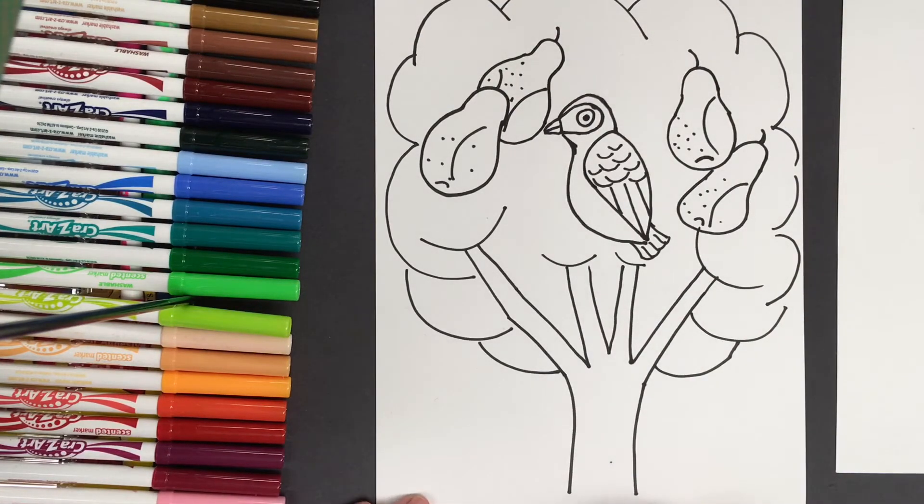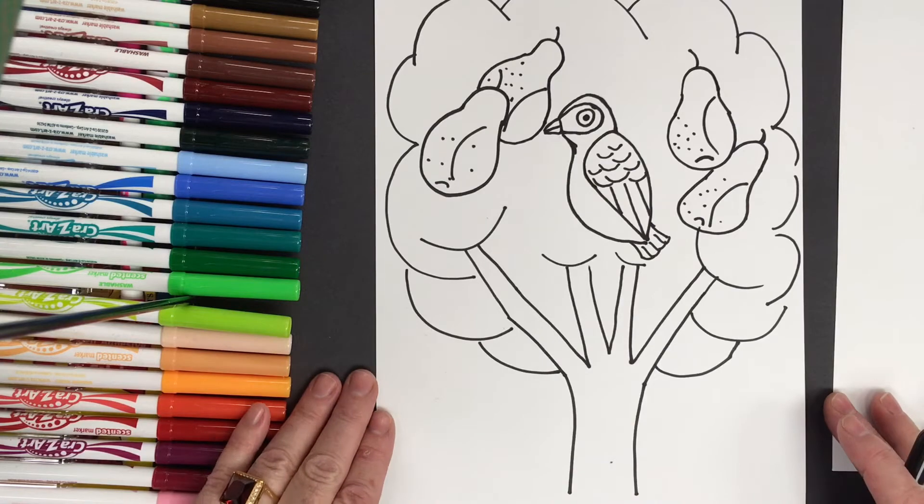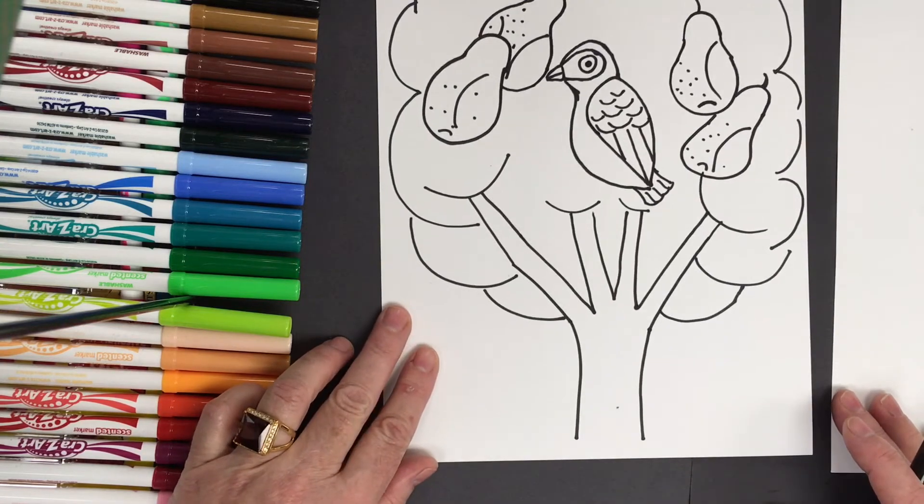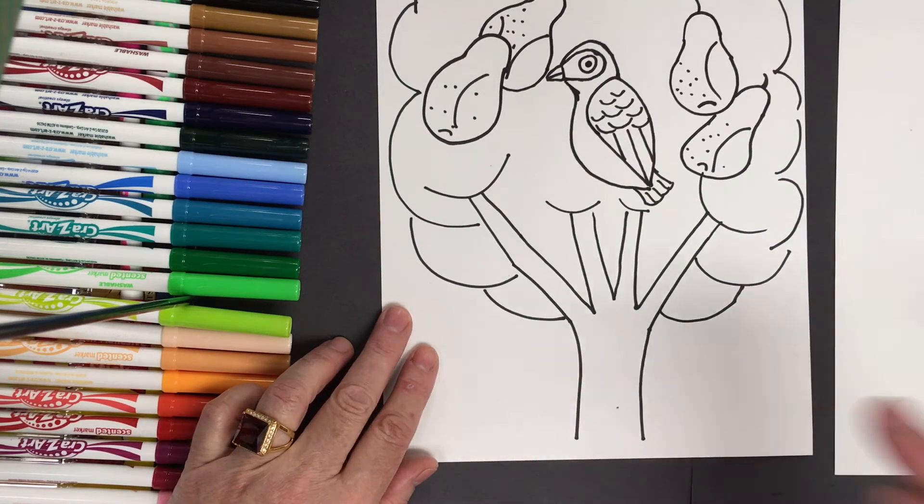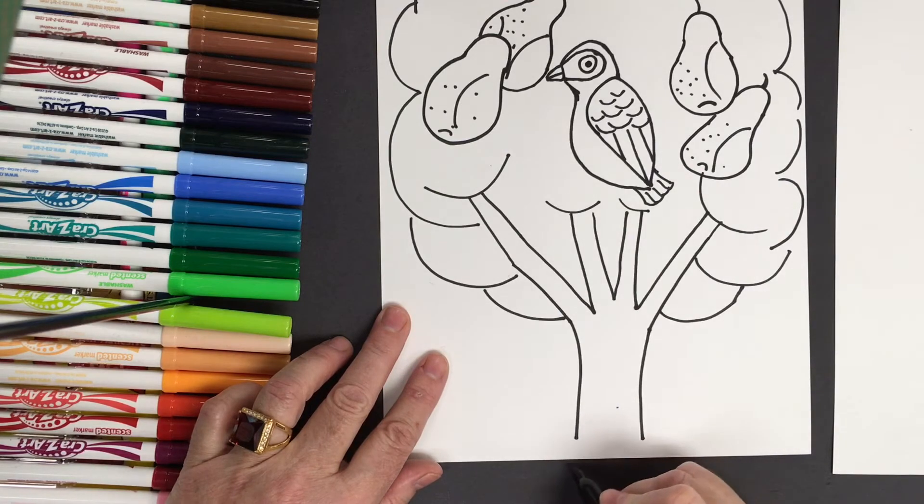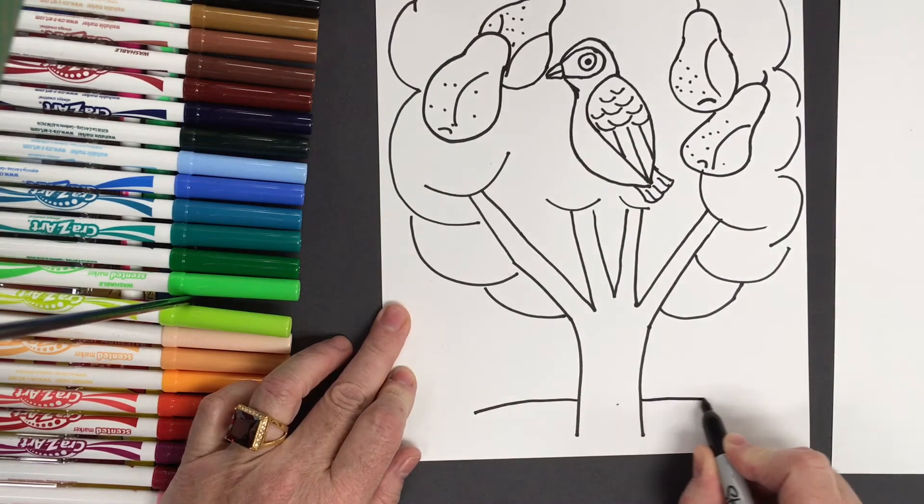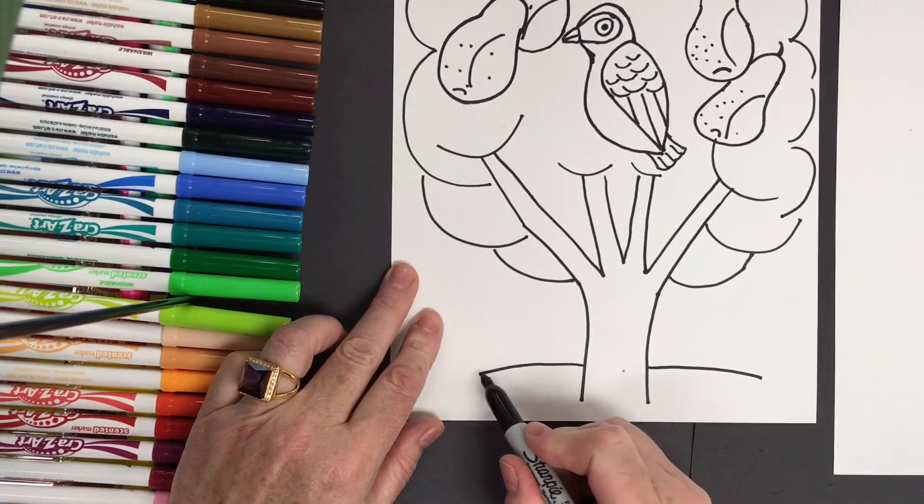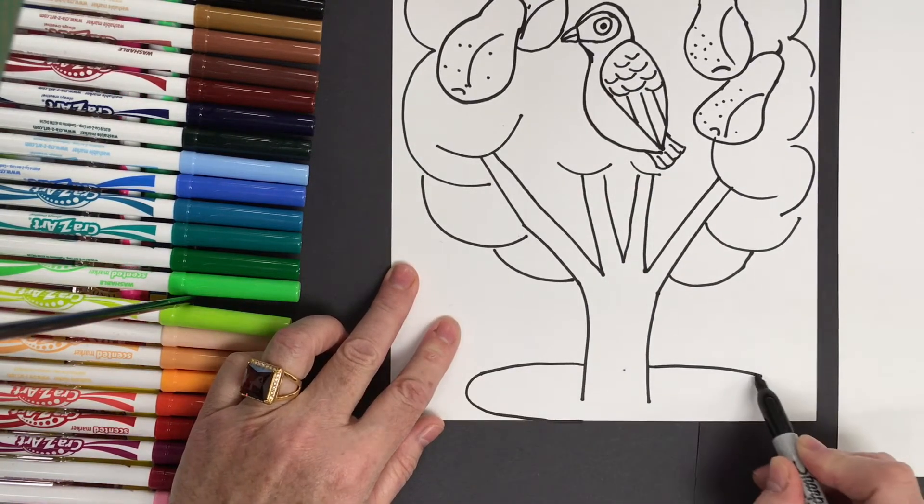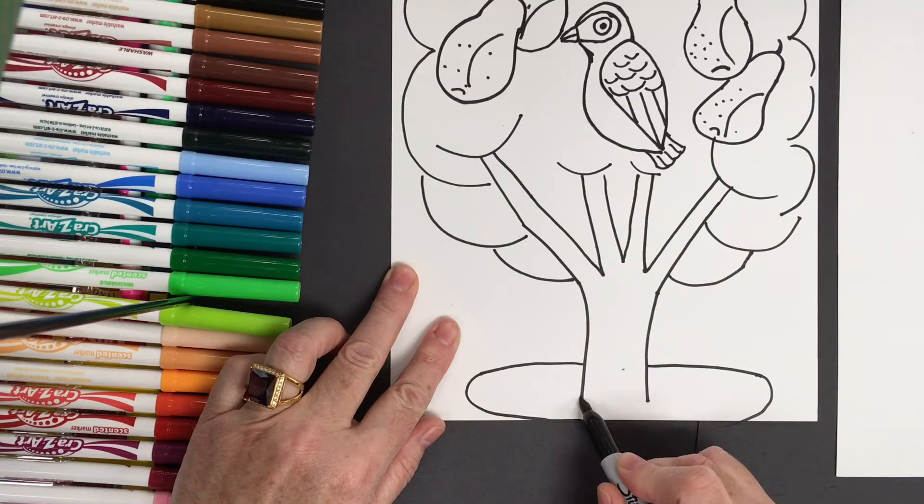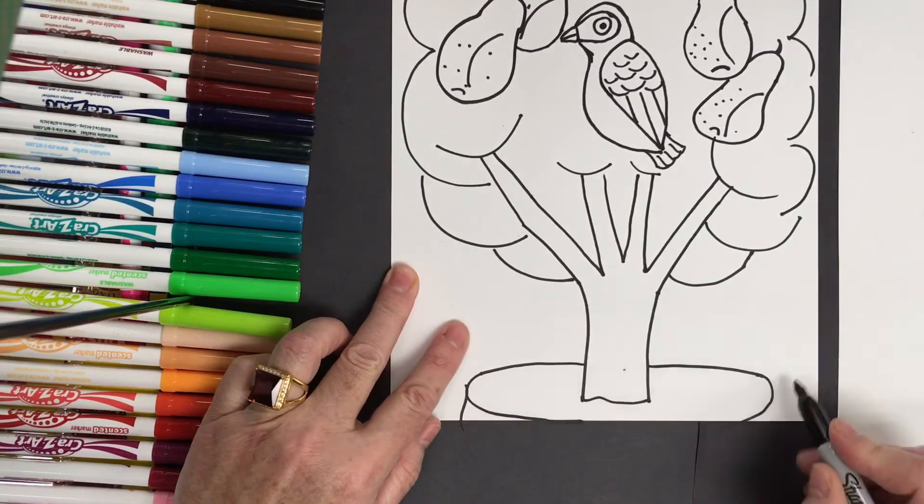And now we're going to decorate it. If you do want to put your pear in a pot, you could put your pear tree in a pot. Or you could have it come straight down right off the page. If it's in a pot, I come out on the bottom, round it like so, and connect down.